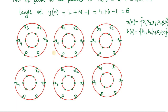Coming to the inner circle, h(n) values are to be positioned there. Start from this position and write h1, then go in the clockwise direction. Arrange all elements clockwise: h1, h2, h3, followed by three zeros.